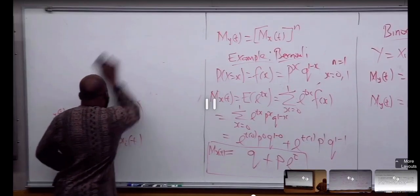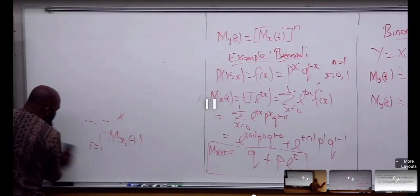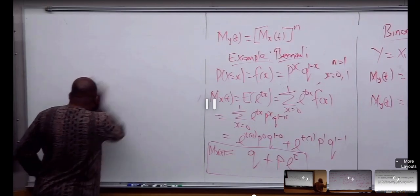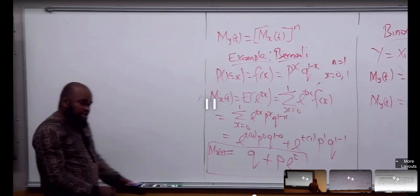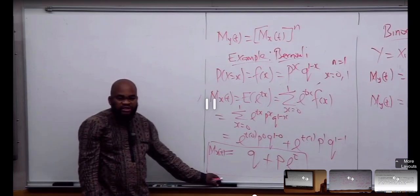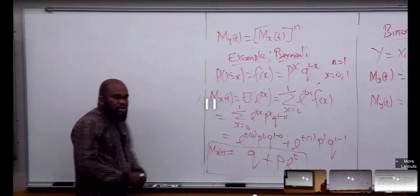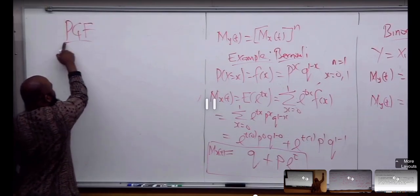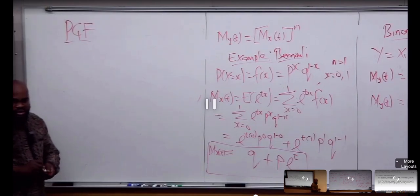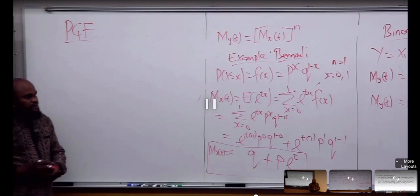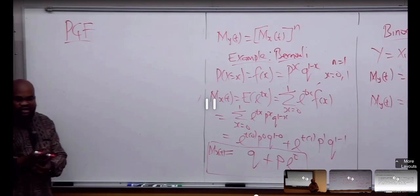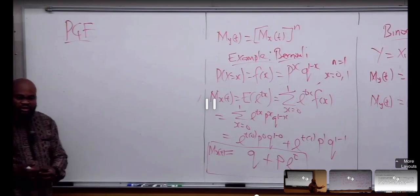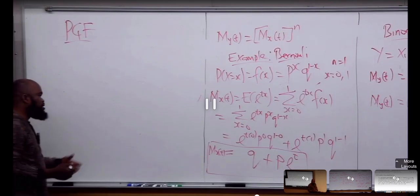The moment generating function is a generalization of the probability generating function. The probability generating function is a special form of the moment generating function. The probability generating function is a power series representation of the probability distribution of a discrete random variable.